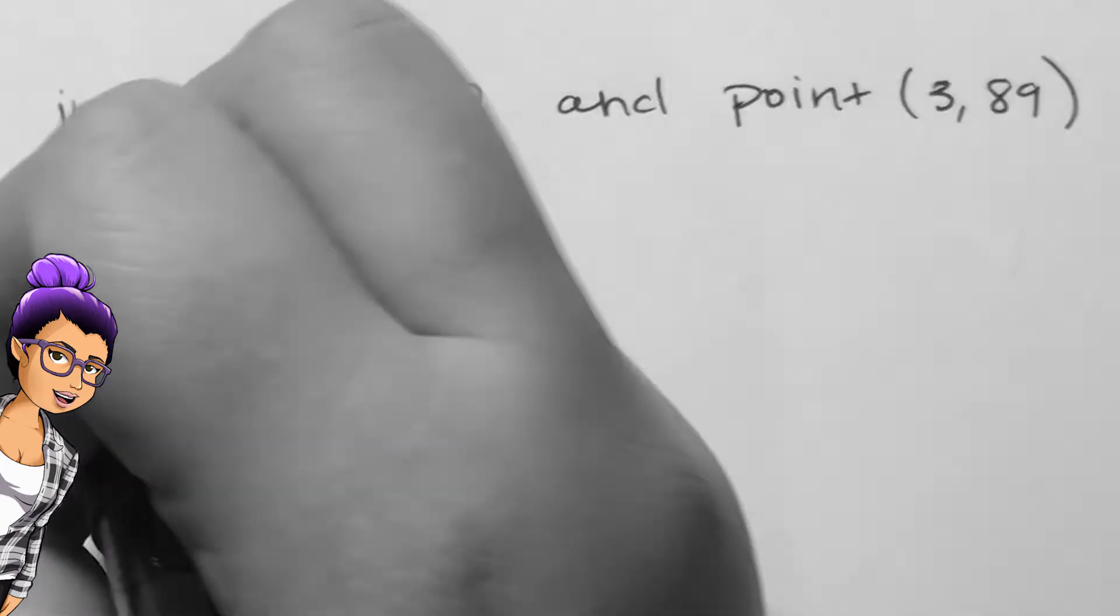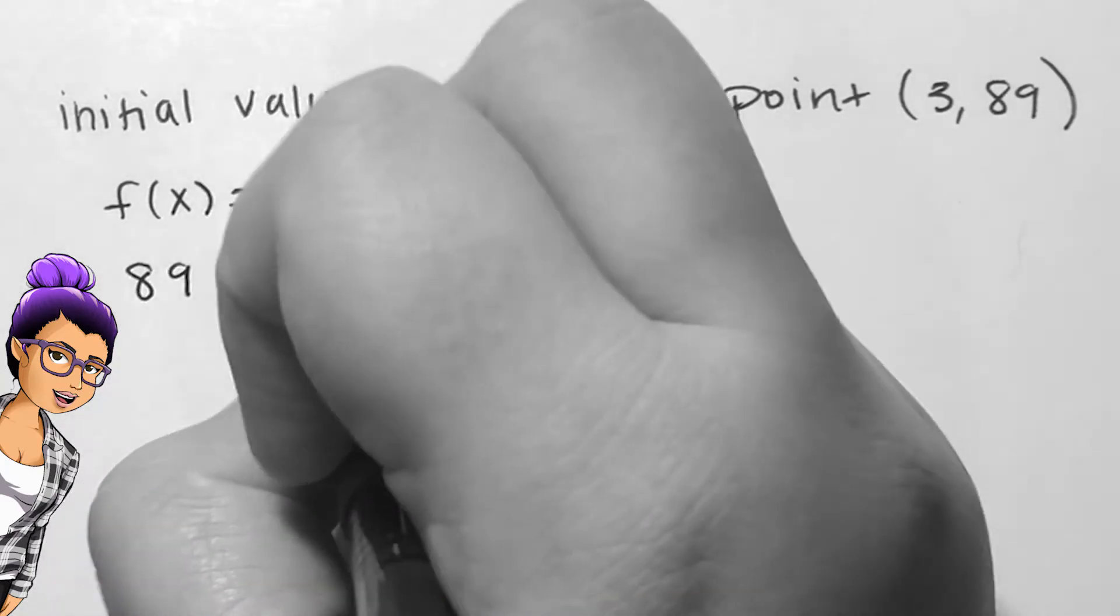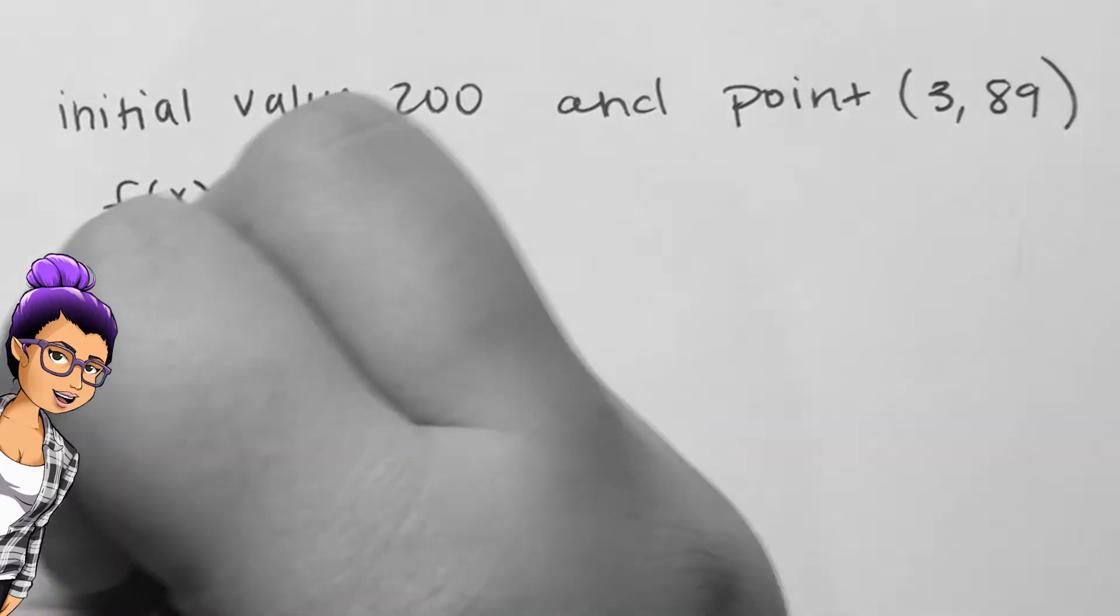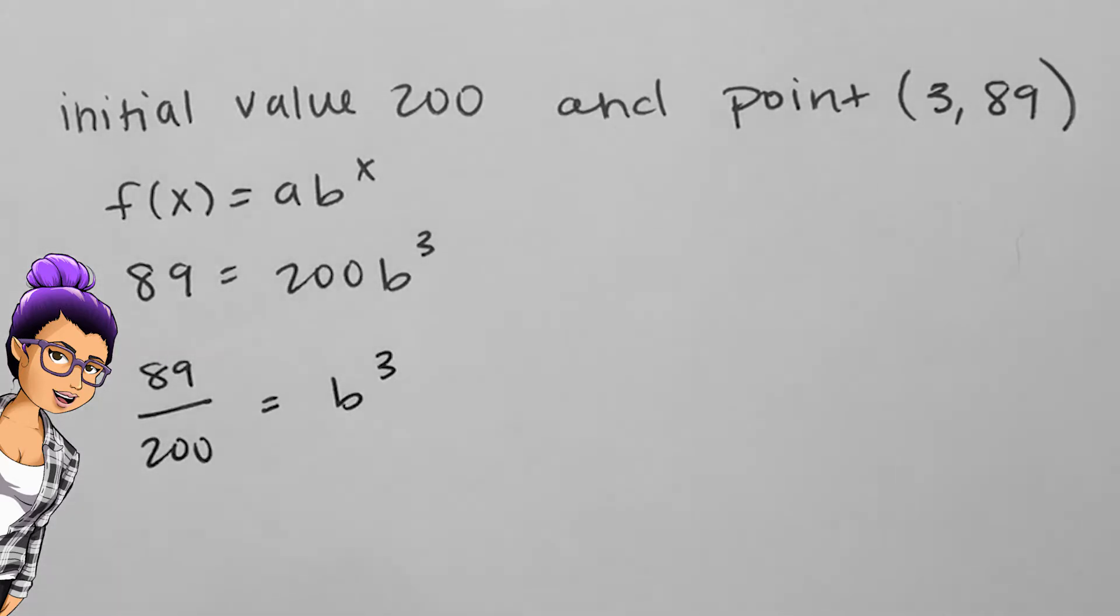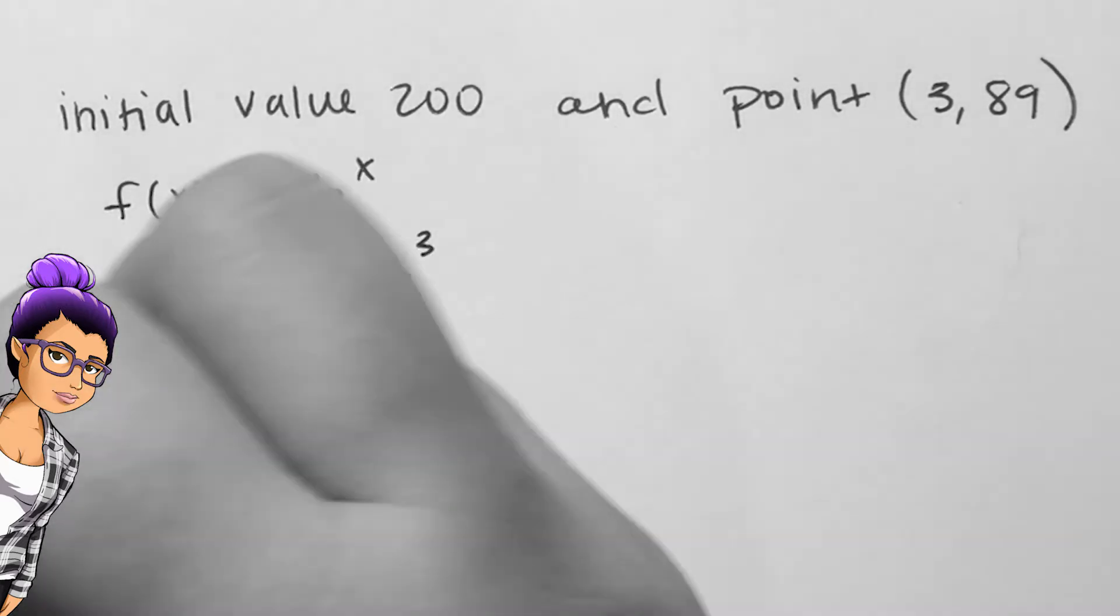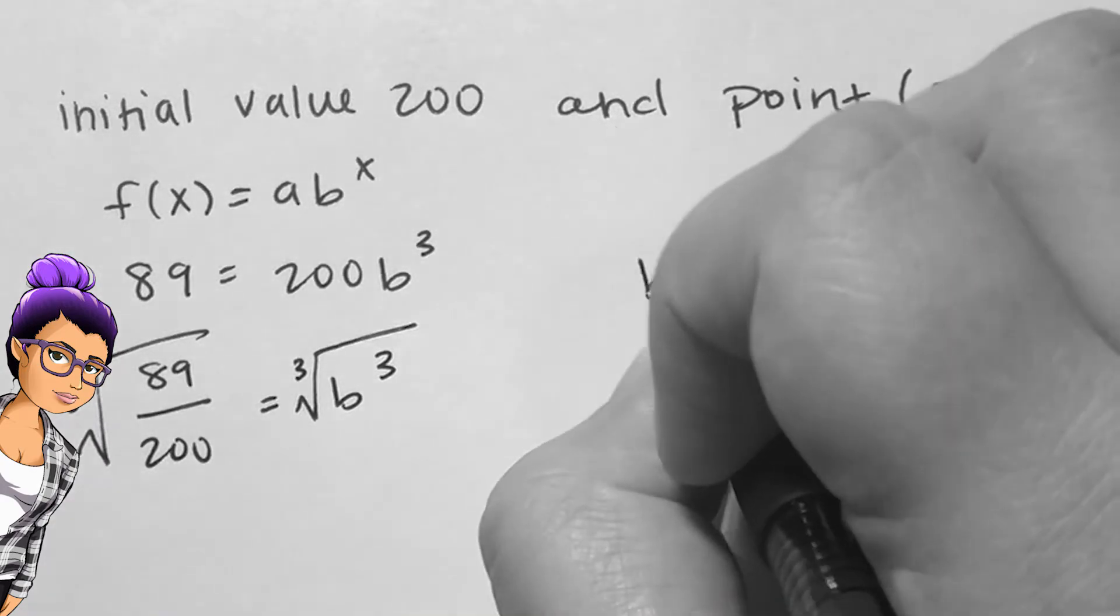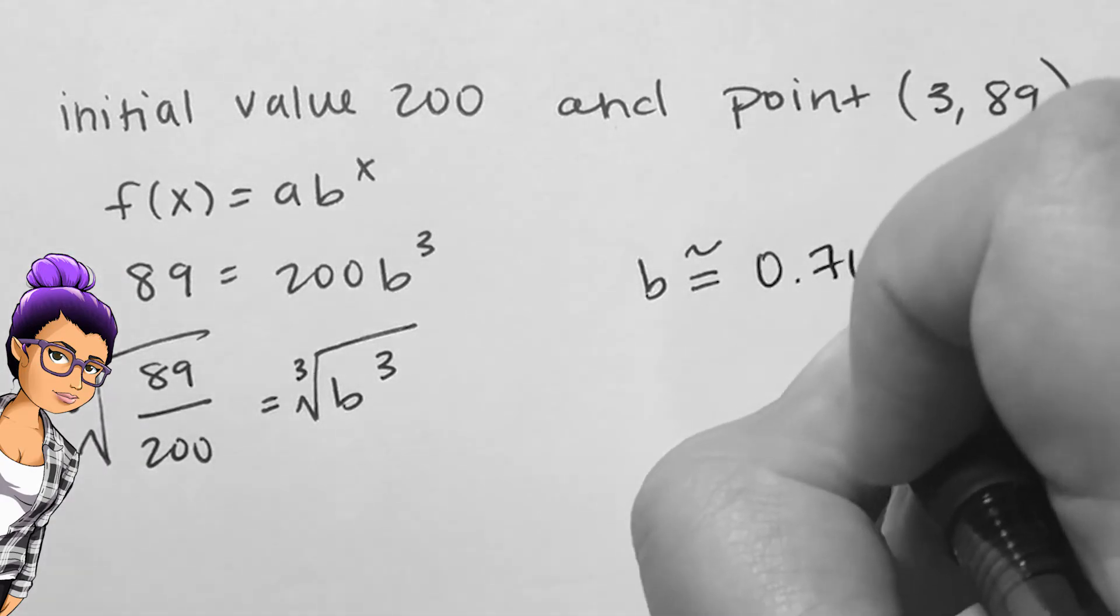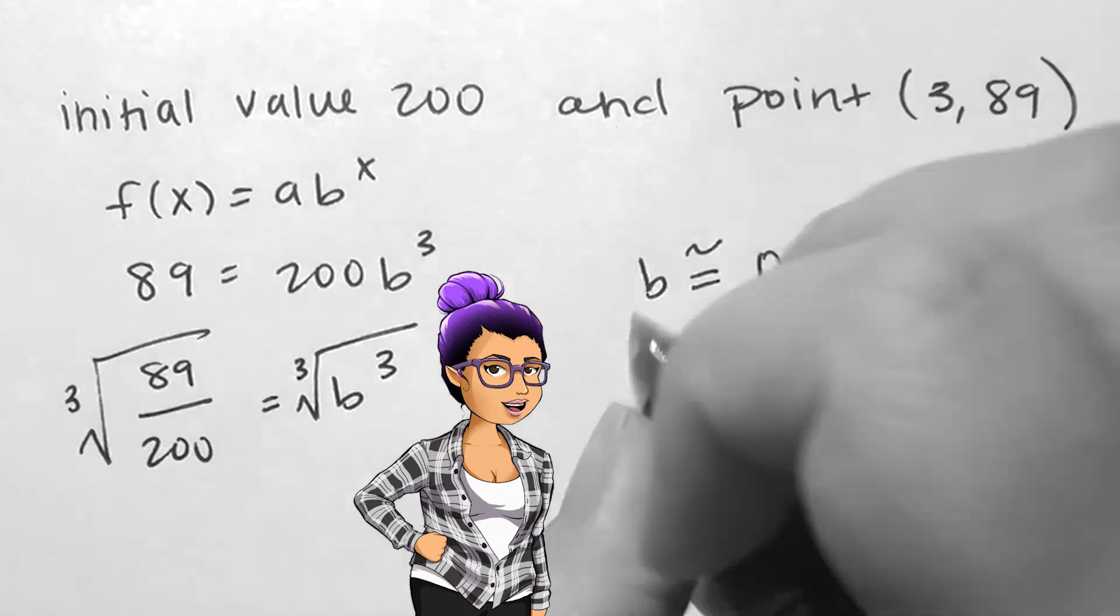Since f of x equals a times b to the x, and we have a and a point, we can use methods we've seen before to find b. You can replace a with 200, x with 3, and f of x with 89 and solve for b. In rounding to three decimal places,